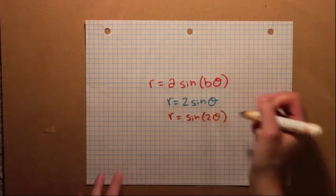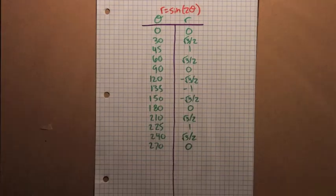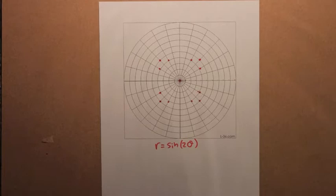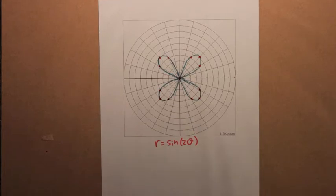So what if we add in a 2 in front of the theta? Again, we make a table, plot our points, and hey, it worked! We have a flower with four petals.